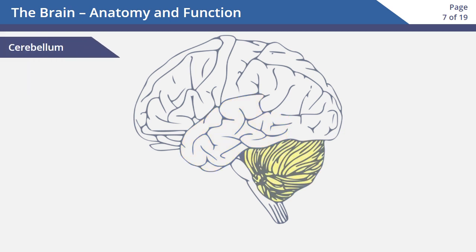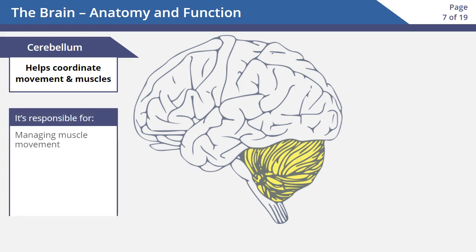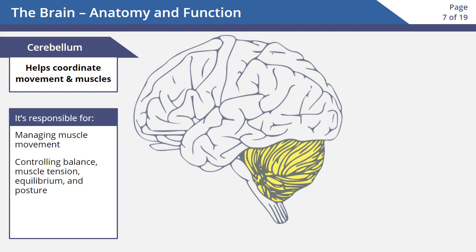The cerebellum helps us coordinate our movement and muscles. It manages all the muscles when we want to walk to our cars, go swimming, or run a marathon. It's responsible for controlling our balance, muscle tension, equilibrium, and posture.